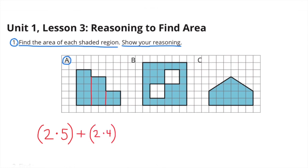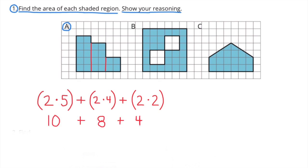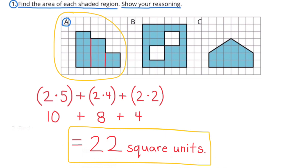The rectangle in the middle is 2 units wide by 4 units tall. And the square on the right side is 2 units wide by 2 units tall. 10 plus 8 plus 4. The area of shape A is 22 square units.